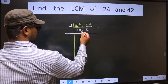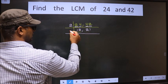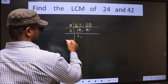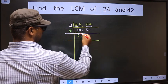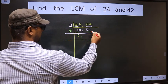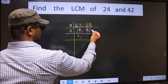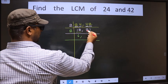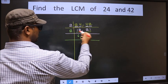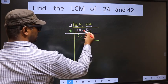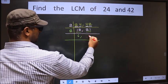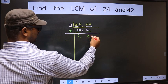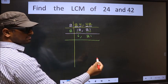Here we have 12 — 12 divided by 2 is 6, and 12. The other number is 21 — last digit 1, not even, so this number is not divisible by 2, so we write down 21 as it is.